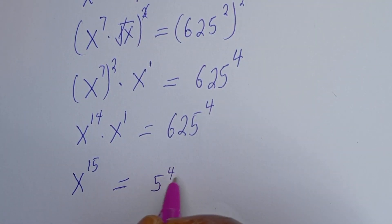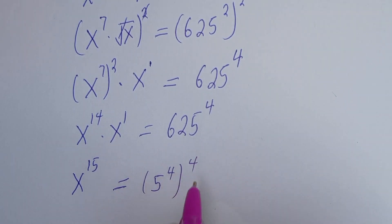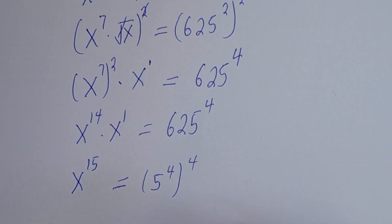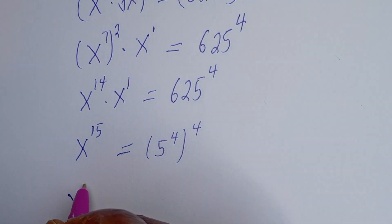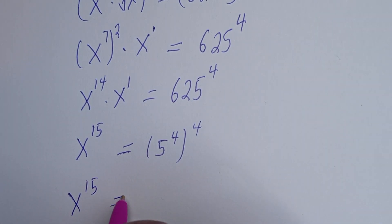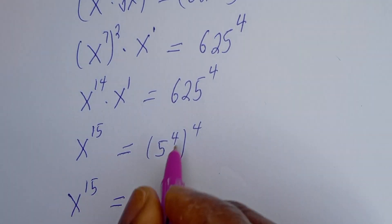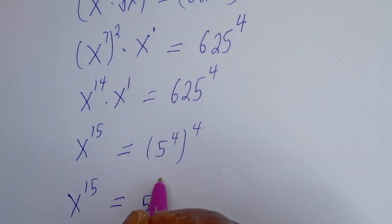Now, 625 is 5 to the power of 4, then to the power of 4. So this is s to the power of 15 is equal to 5 to the power of 4 times 4, that is 16. So we have s to the power of 15 equals 5 to the power of 16.